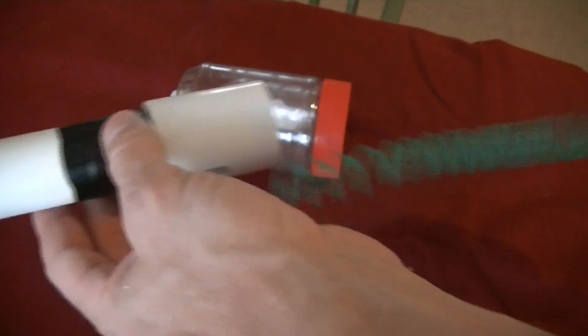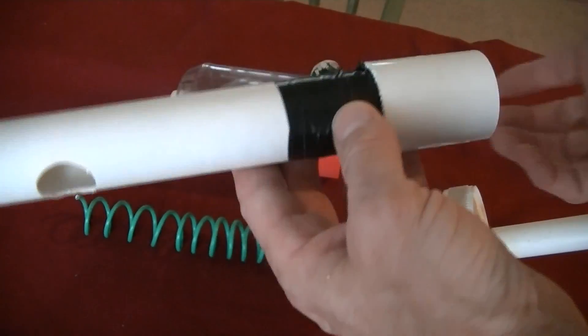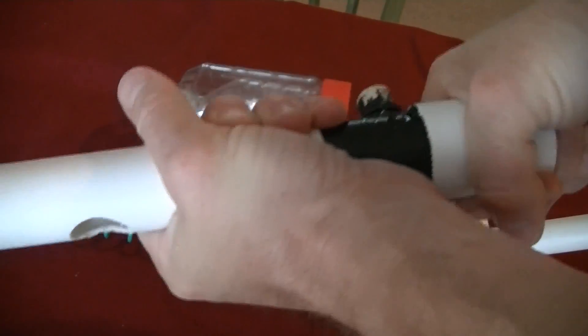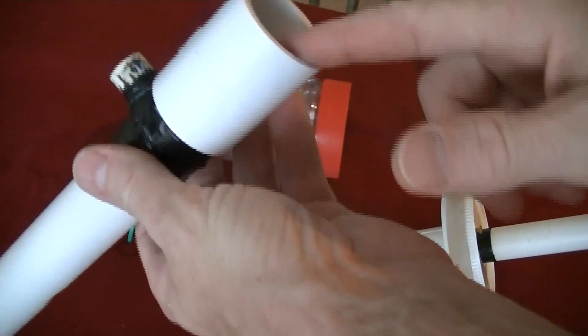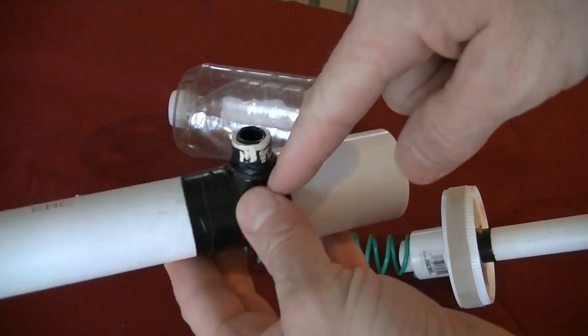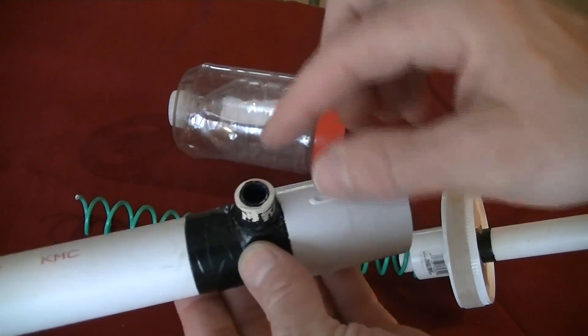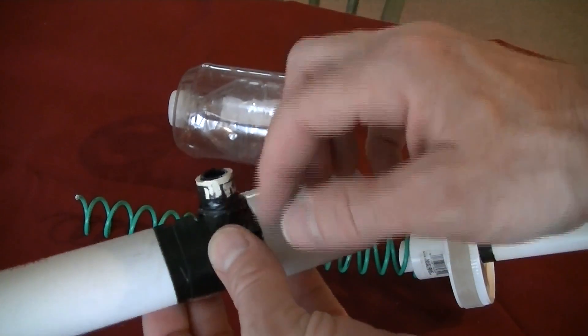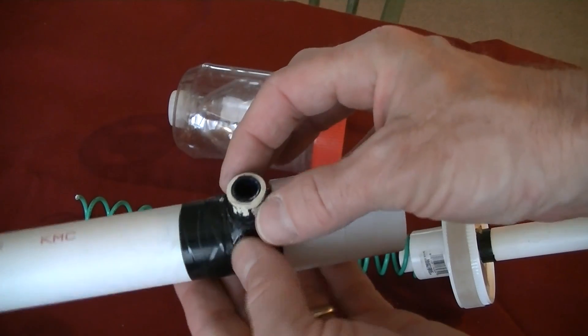So the way I did this was just a one-inch PVC pipe with a one-inch coupling. I drilled a hole and put a half-inch CPVC, but you could use whatever works for you.